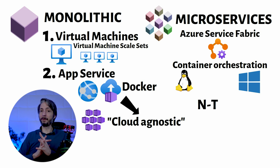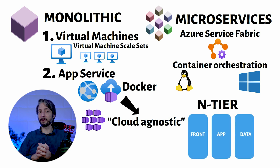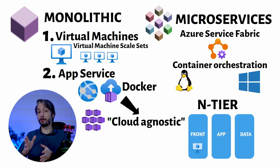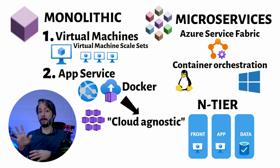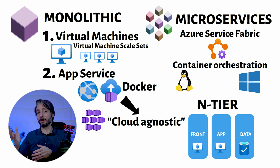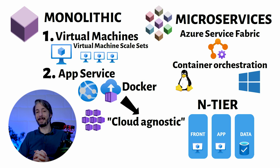For N-tier applications, it can be quite straightforward. The focus is usually virtual machines combined with different PaaS services. In the front-end and application tier, we have virtual machines running. The back-end database can perfectly reside on, for example, PostgreSQL or any suitable service in Azure.